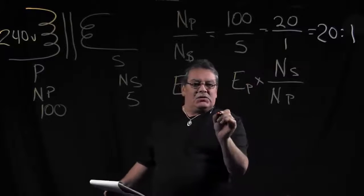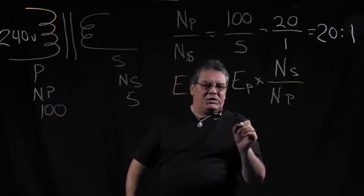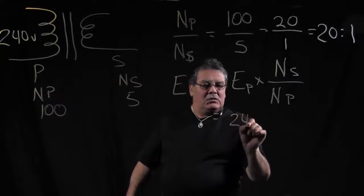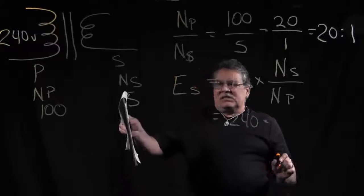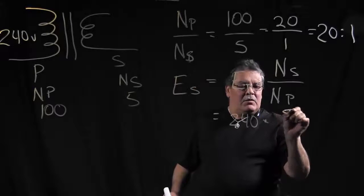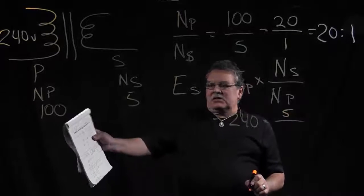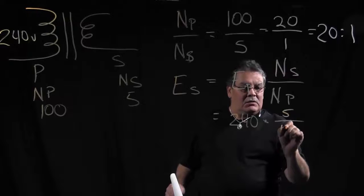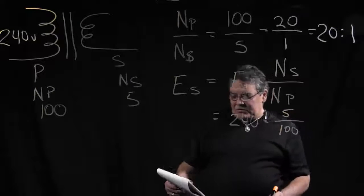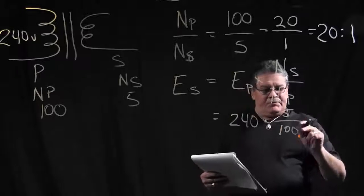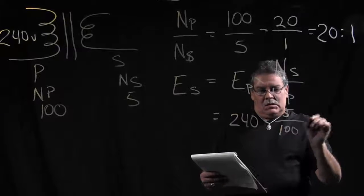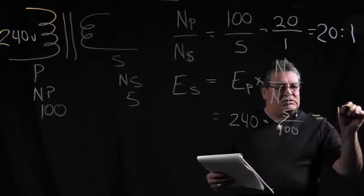So in this situation here, we have our primary voltage of 240 volts, OK, times our turns in the secondary is 5. And then our turns in the primary is 100. OK, so we could do this math, and what we would come up with is 12 volts.